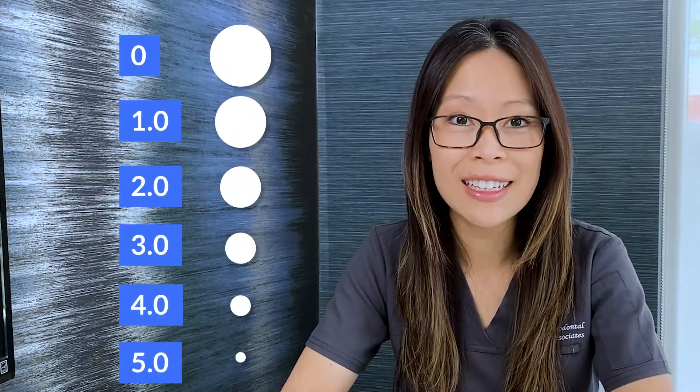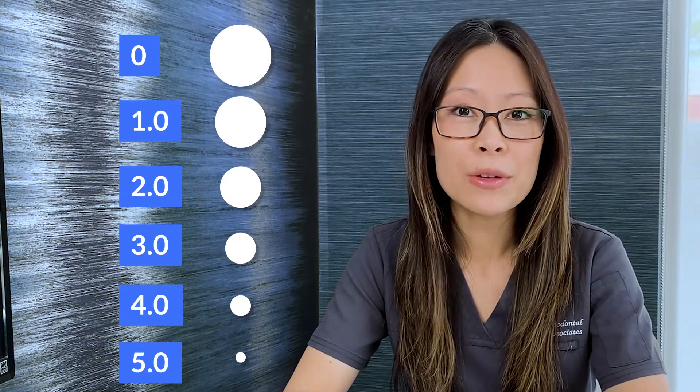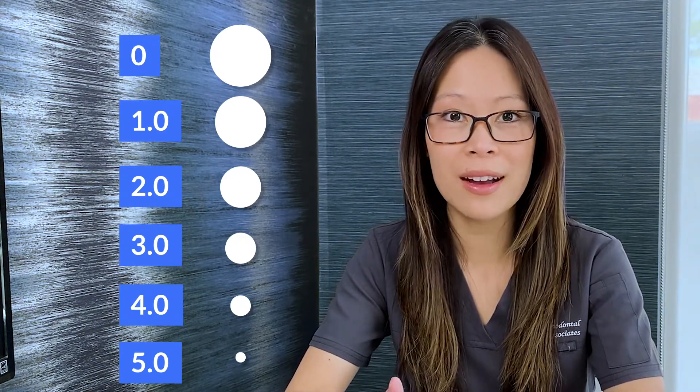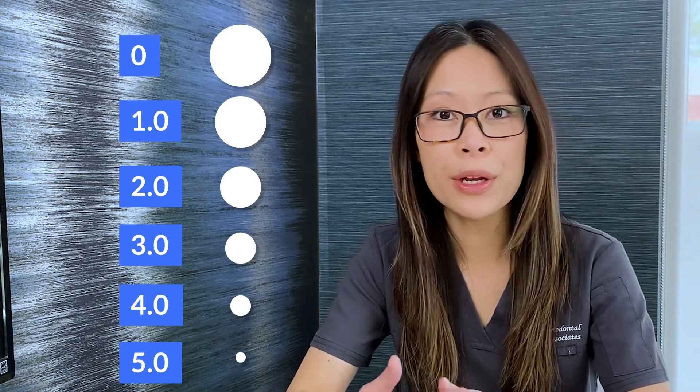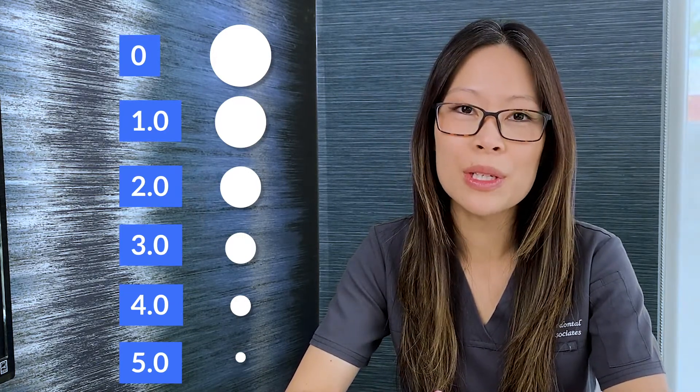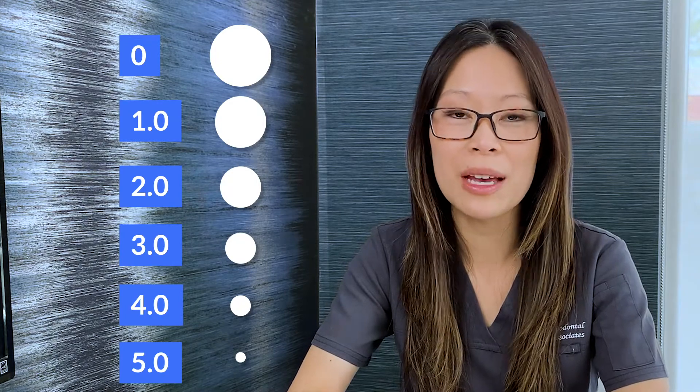The nomenclature is a bit counterintuitive, but the higher the number, the smaller the thread size. For example, a 3.0 gut will have a thicker thread size than a 4.0 gut. This concept is similar to the needle gauge nomenclature that we're familiar with in dentistry. In general, the smaller the thread or the higher the number are used for smaller wounds or more friable tissues. In dentistry, the most common sizes are between 3.0 and 6.0.